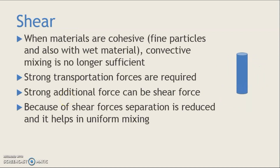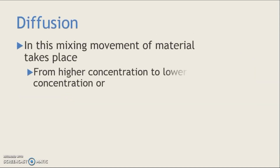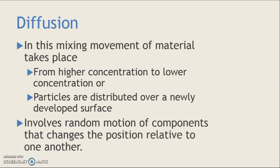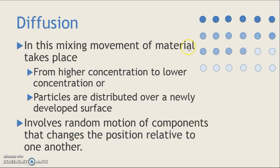The third mechanism is diffusion. In diffusion mixing, movement of material takes place from higher concentration to lower concentration, or particles are distributed over a newly developed surface. It involves random motion of the components that changes their position relative to one another. As you can see in the dotted diagram, the colors change because of diffusion, and finally after some time a uniform colored mixture is formed. This mechanism where movement of components takes place relative to one another is called diffusion mixing.